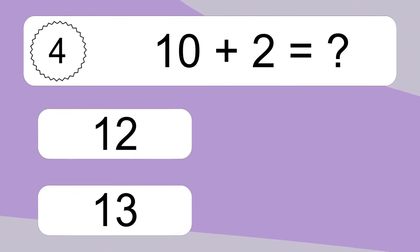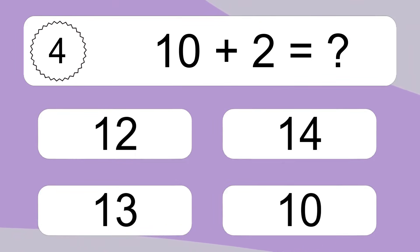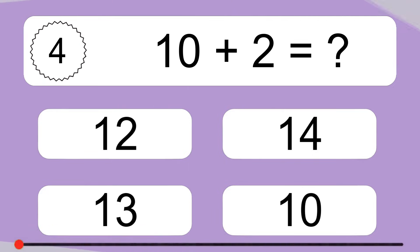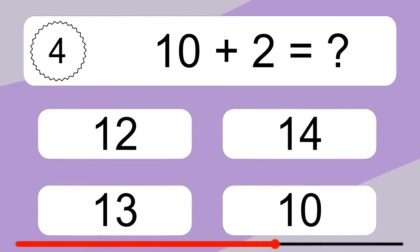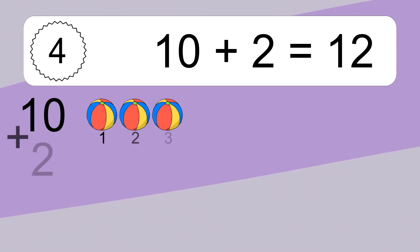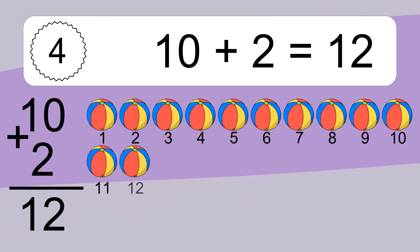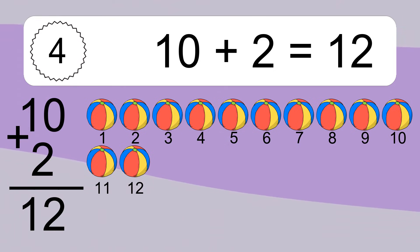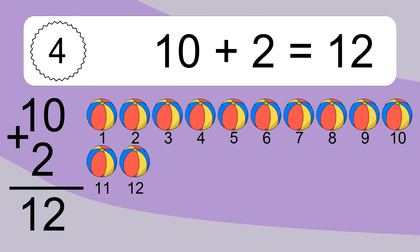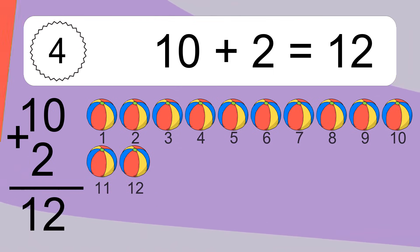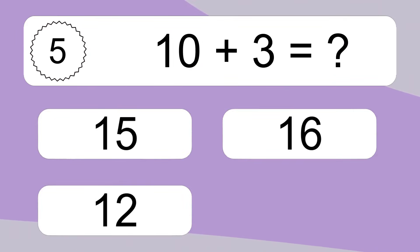Ten plus two equals what? Ten plus two equals twelve. Let's count it: one, two, three, four, five, six, seven, eight, nine, ten, eleven, twelve.